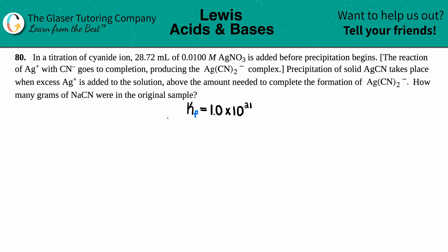Number 80. In a titration of cyanide ion, 28.72 milliliters of a 0.0100 molar AgNO3 solution is added before precipitation begins.